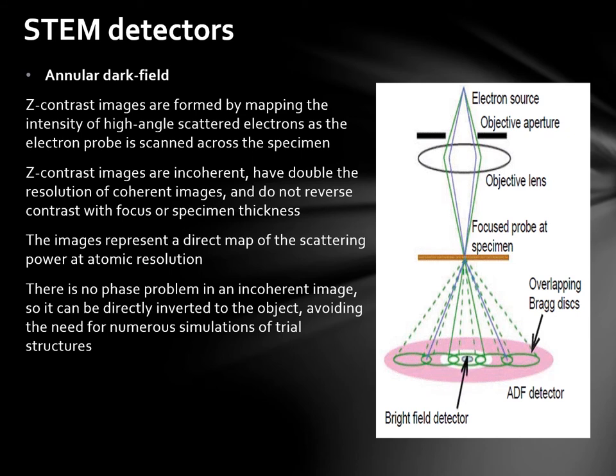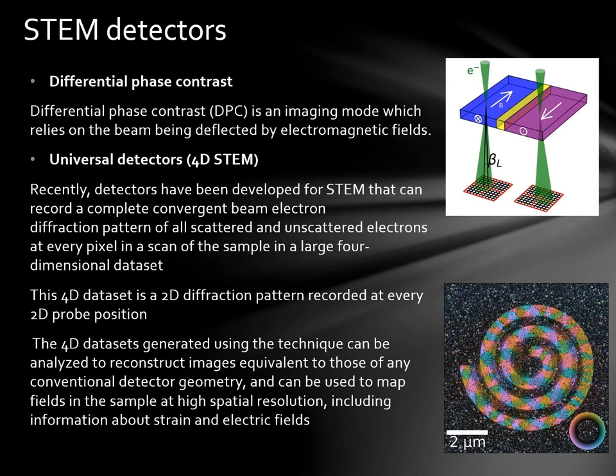To continue with annular dark field detectors, the Z-contrast images are formed by mapping the intensity of high-angle scattered electrons as the electron probe is scanned across the specimen. Z-contrast images are incoherent, have double the resolution of coherent images and do not reverse contrast with focus or specimen thickness. The images represent a direct map of the scattering power at atomic resolution. There is no phase problem in an incoherent image, so it can be directly inverted to the object, avoiding the need for numerous simulations of trial structures.